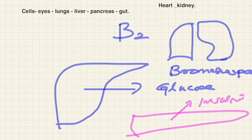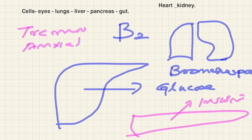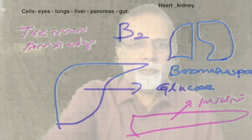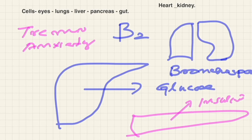Beta 2 receptors are present in the central nervous system and in muscles. Stimulation of beta 2 receptors is responsible for tremor and anxiety. In diabetic patients, blockage of beta receptors can lead to hypoglycemia unawareness — when hypoglycemia occurs, sympathetic stimulation is blunted, so patients on beta blockers develop hypoglycemia unawareness.